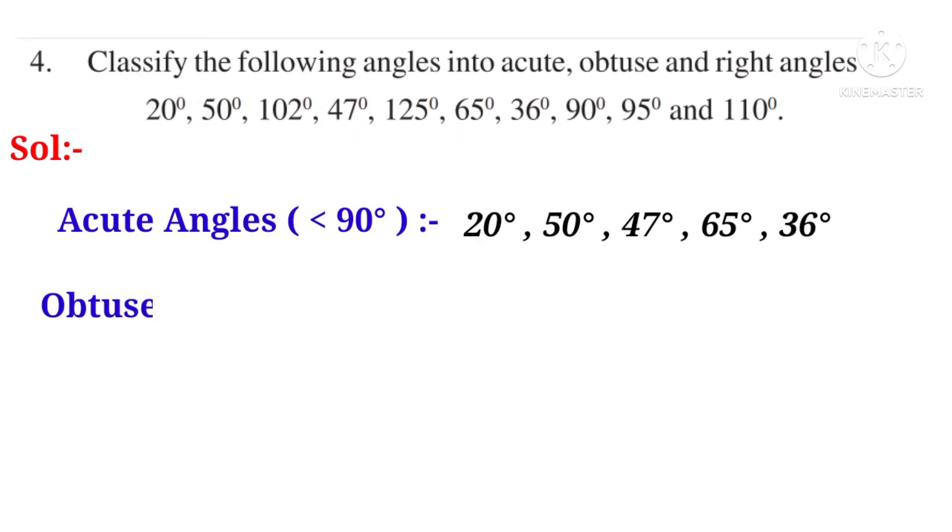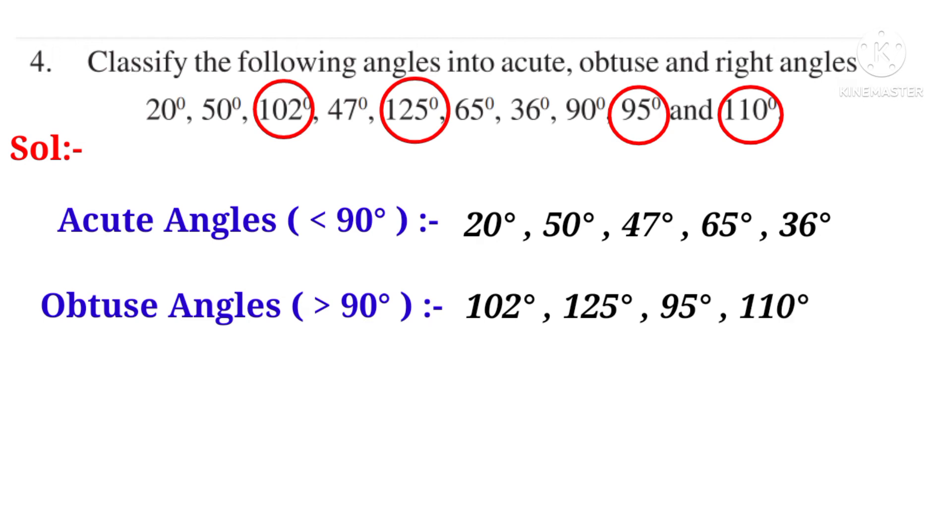Obtuse angles are the angles which are greater than 90 degrees. They are 102 degrees, 125 degrees, 95 degrees and 110 degrees.